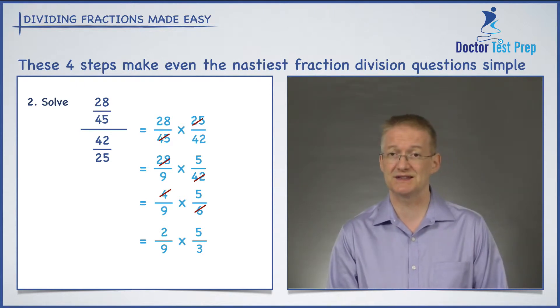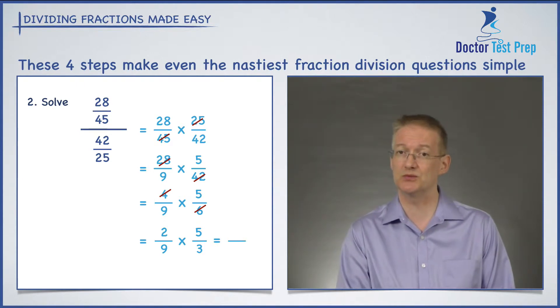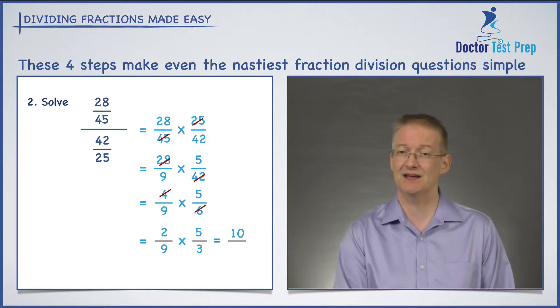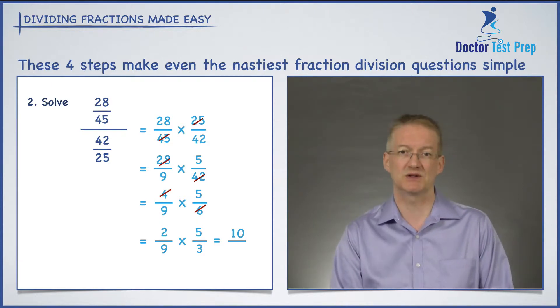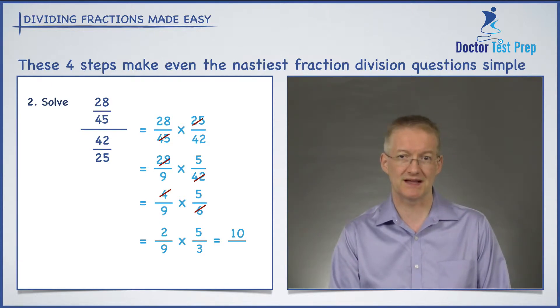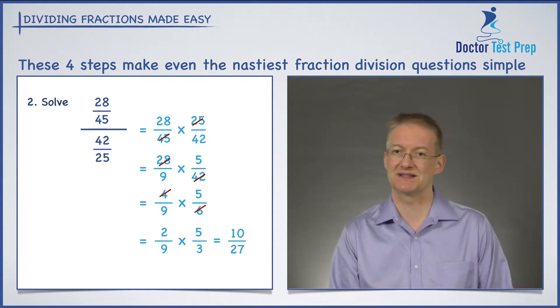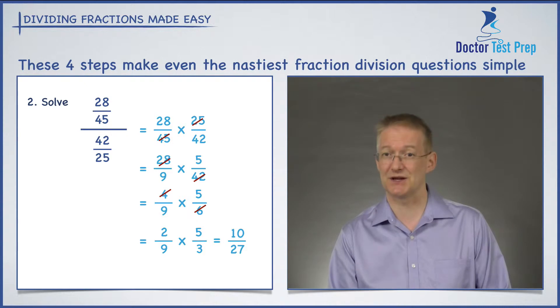So I have 2 over 9 times by 5 over 3. Nothing else will reduce at this stage, so I'm going to multiply the numerators together: 2 times 5 is 10. And multiply the denominators together: 9 times 3 is 27. So 10 over 27 is my answer.